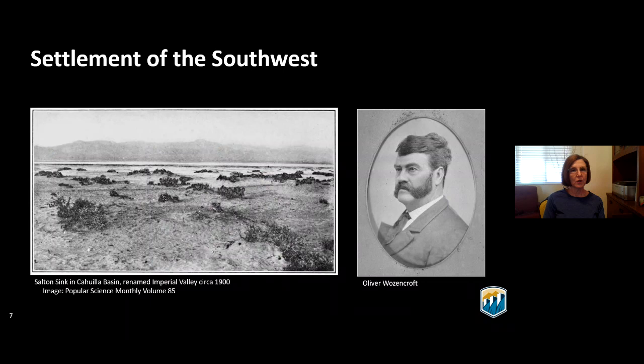The biggest impact of the gold rush was it brought really strong federal awareness of the military and economic significance of the West. Oliver Wozencroft, a restless doctor living in New Orleans at the time, was infected with gold fever and headed west. He took the southern route across Yuma and across the Sonoran Desert into California, passing through what was then called the Salt and Sink. He didn't make it rich in gold, but he stayed in California and became obsessed with developing a large commercial irrigation project to irrigate those fertile lands from the soil deposits of the Colorado River.